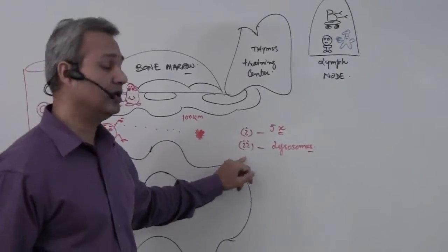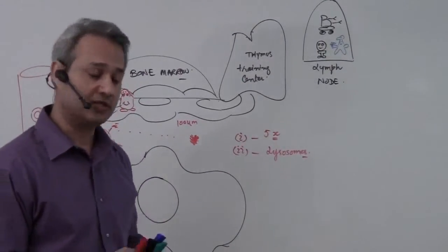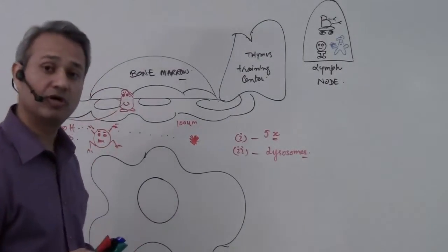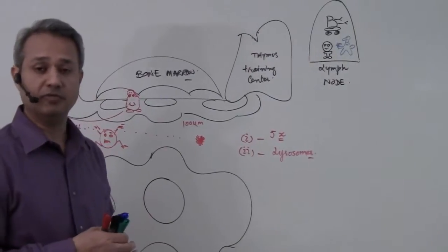Number one. And number two, a lot of lysosomes are produced inside. The digestive enzymes are produced inside. So the cells now become a mature macrophage, which is now ready to become participant in immune system.